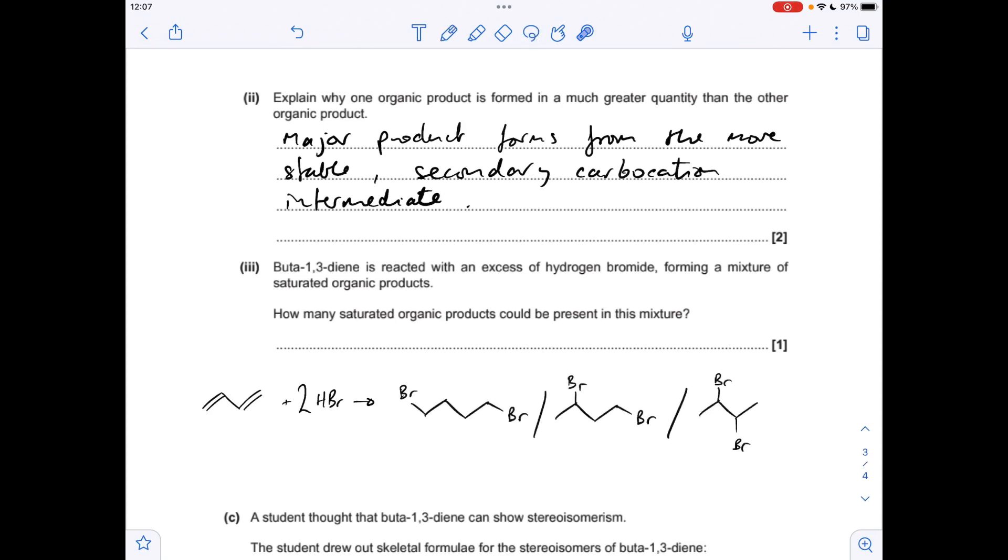In terms of possible products that will form, you could put the bromines at either end of the chain, so we'd get that product there. We could put a bromine here and a bromine at the end—obviously that gives that one there—or the two bromines from the two HBr could go here and here. So the total possible number of products is three.